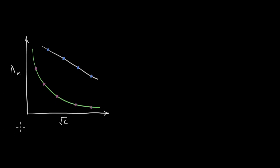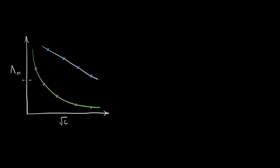In this video, we will be looking at how we can use Kohlrausch's law to calculate the limiting molar conductivity of weak electrolytes. This plot here shows the variation of molar conductivity with concentration. The green curve is the variation of molar conductivity for a weak electrolyte, and the white line is the variation of molar conductivity for a strong electrolyte.